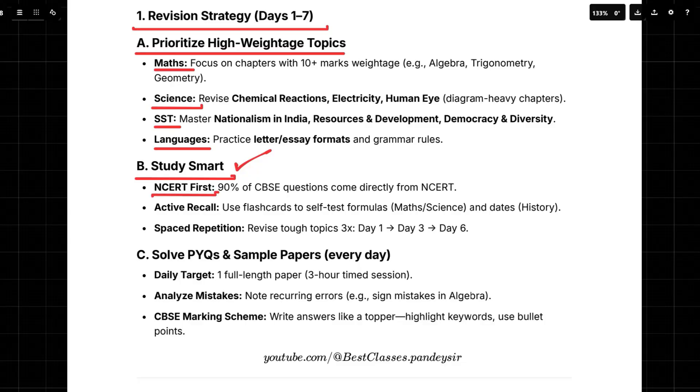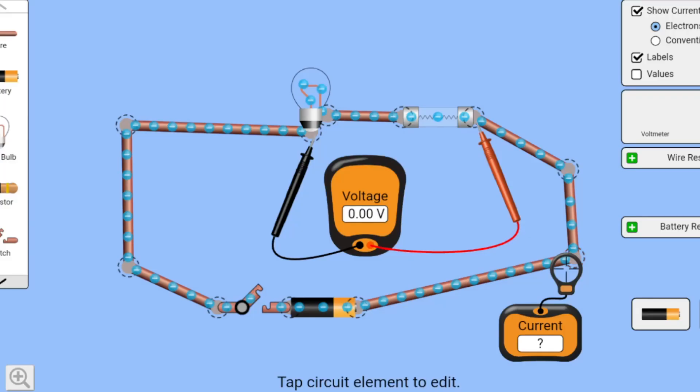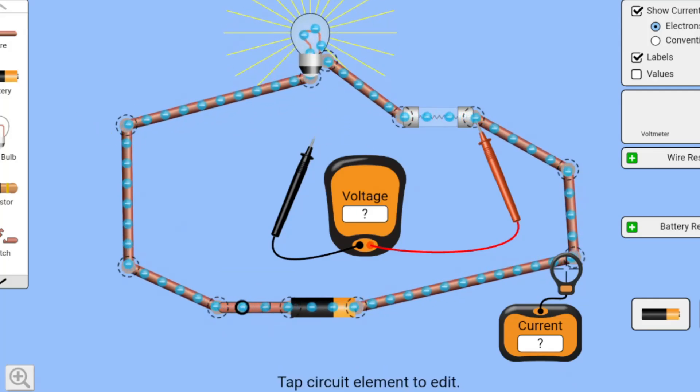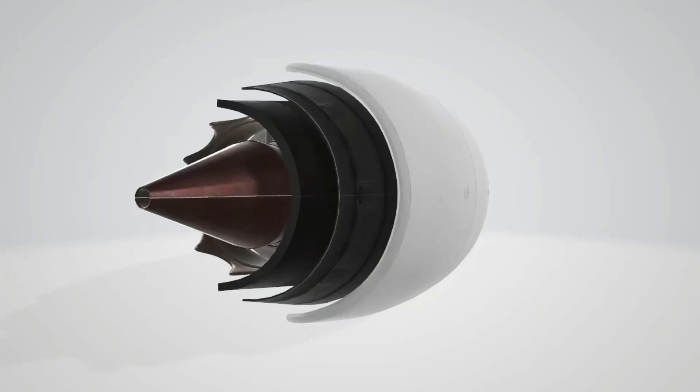It said that 90% of the questions come directly from the NCERT. Wow, 90%. That's incredible. It's like, there's no need to chase after fancy reference books. The gold mine is right there in front of you. But it's not enough to just passively read them. You got to actively engage with the material. I'm all ears. How do we do that?